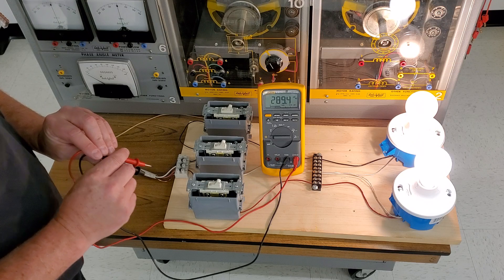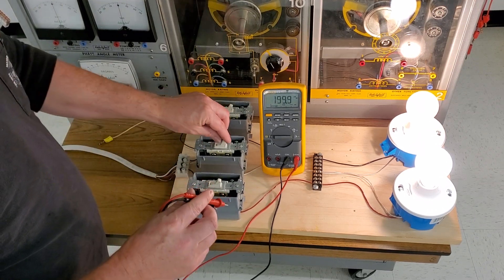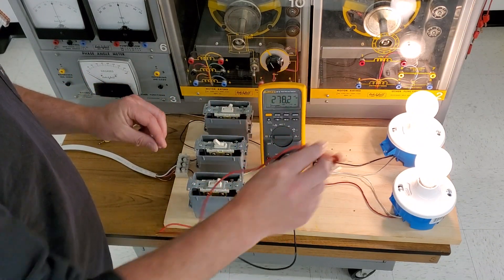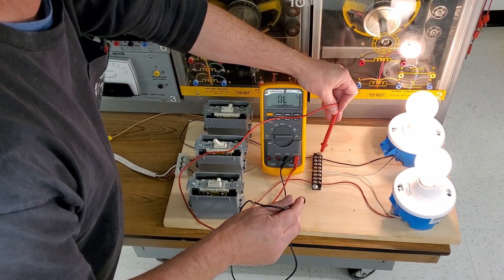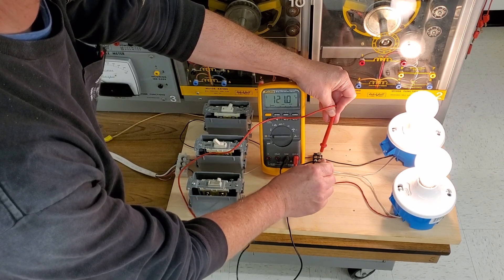What happens if we lose the neutral? Then essentially we put these two light bulbs in series with each other. And you'll notice that from hot to neutral with this bulb, because we are slightly less resistance on this bulb, we're reading 120 volts.